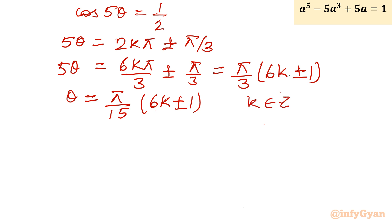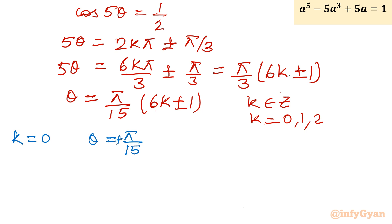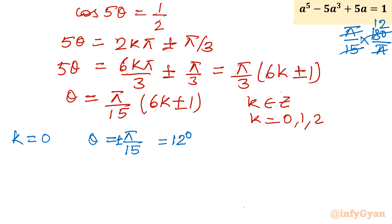Now I will put k = 0, 1, 2. For k = 0: θ = π/15 × (±1), giving θ = π/15. Since cos(-θ) = cos(θ), both signs give the same cosine value. Converting π/15 to degrees: (π/15) × (180/π) = 12°. So the first angle is 12°.